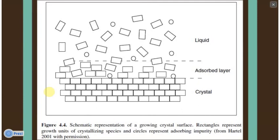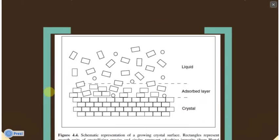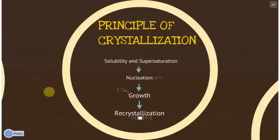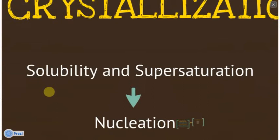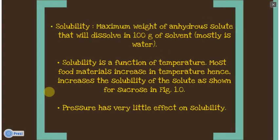This principle of the phenomena will now be presented by Lina. Hi, I'm Lina. I'm going to talk about the principle of crystallization. Basically, there are four important steps in crystallization, typically including solubility and supersaturation. The first one is solubility, which means the maximum weight of anhydrous solute that will dissolve in 100 grams of solvent, mostly water. Solubility is a function of temperature — most food materials increase in temperature, which increases the solubility of the solid, as shown for sucrose in figure 1.0.